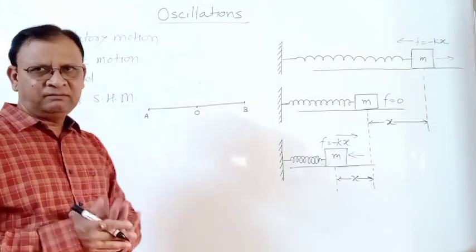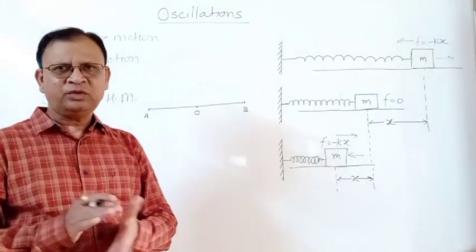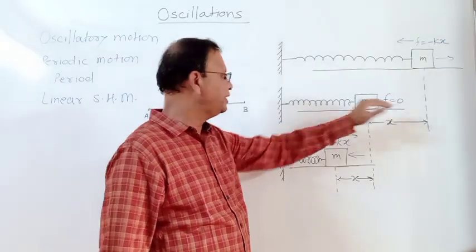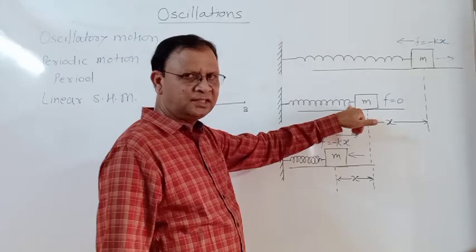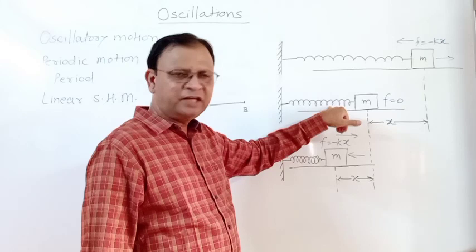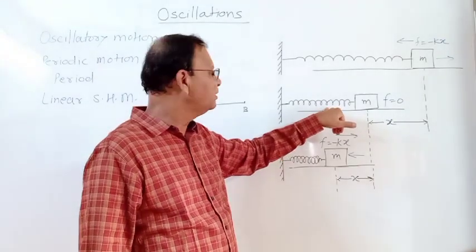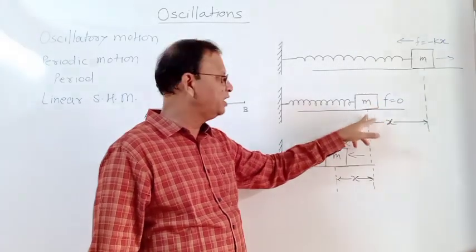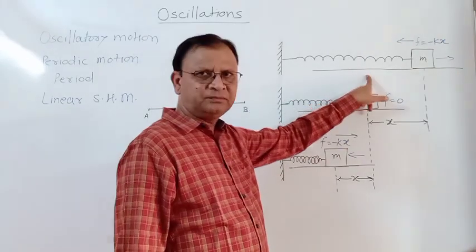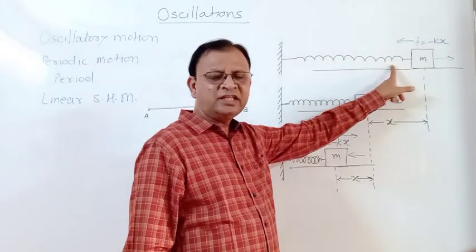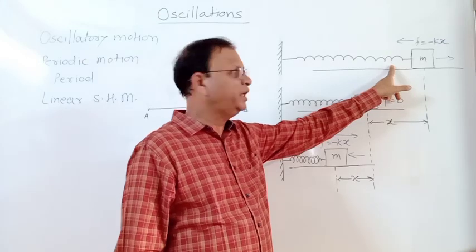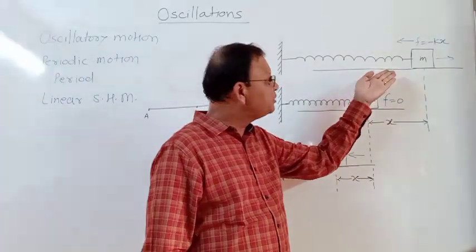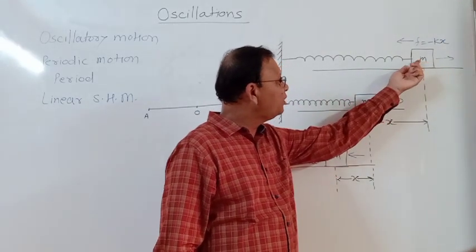To define linear SHM, consider a block of mass M on a frictionless surface connected to a spring. When the spring is neither stretched nor compressed, it is in equilibrium and the force on the block is zero — this is the equilibrium position. If the block is pulled to the right, the spring elongates and a restoring force pulls the block back toward the mean position. So as displacement is to the right, the force acts to the left — force and displacement are in opposite directions, and as displacement increases, force also increases.